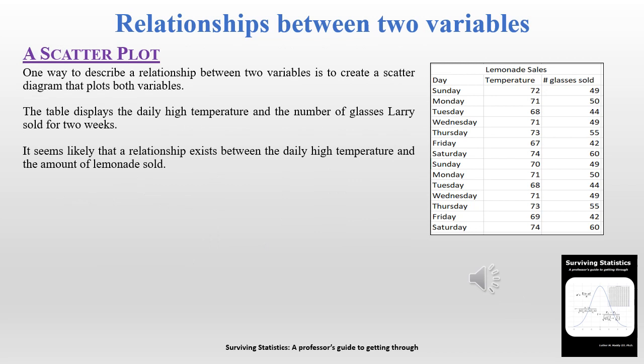With statistics we don't have to guess whether there is a relationship between two variables — there are ways to actually measure that. One way is to create a scatter plot, which lets us plot two variables together and see visually if there's a relationship. In the example on screen, we're thinking there's a relationship between the temperature of the day and the number of glasses sold. We have a couple weeks' worth of data recording the high temperature and glasses sold, and we're going to plot this in a scatter plot.